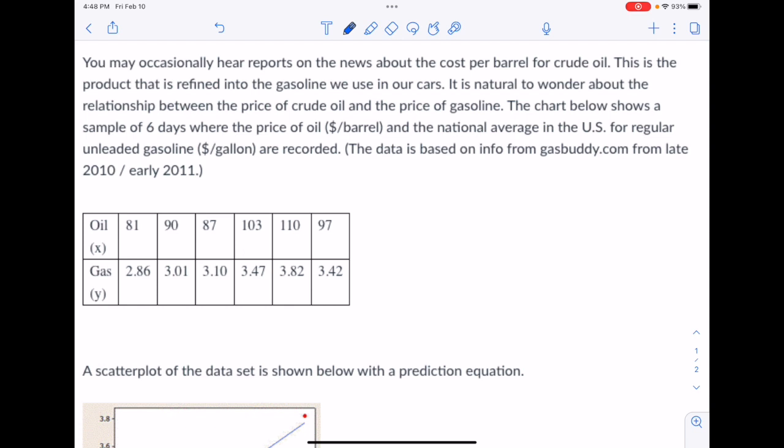You may occasionally hear reports on the news about the cost per barrel for crude oil. This is the product that is refined into gasoline we use in our cars. It's natural to wonder about the relationship between the price of crude oil and the price of gasoline. The chart below shows a sample of six days where the price of oil in dollars per barrel and the national average in the U.S. for regular unleaded gasoline in dollars per gallon are recorded. The data is based on info from gasbuddy.com from late 2010 and early 2011.